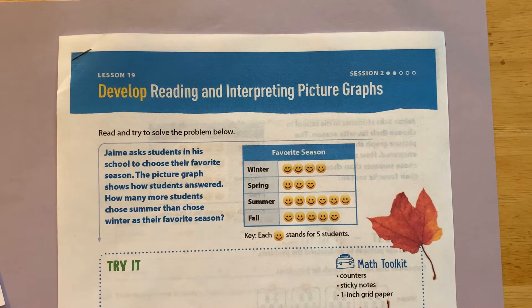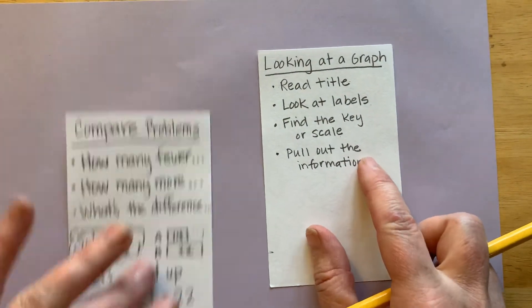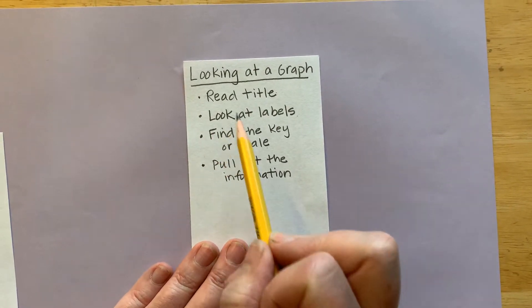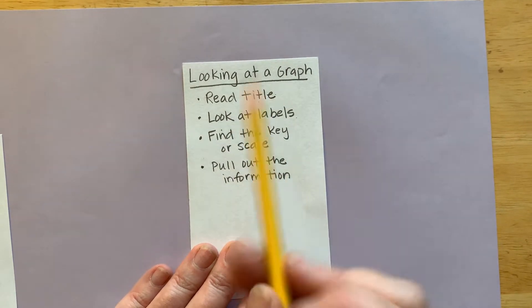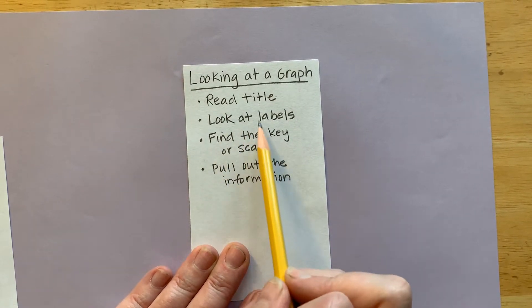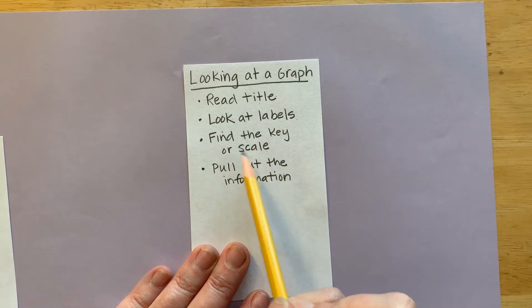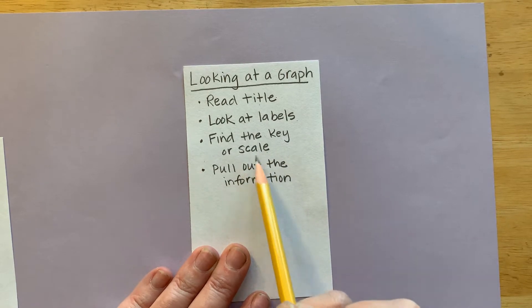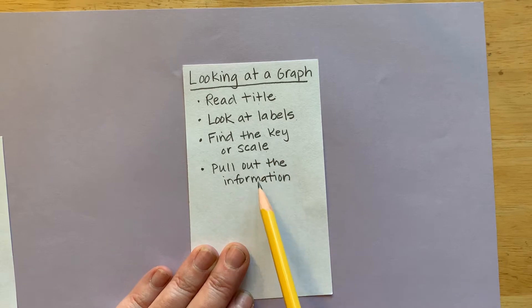Before we get started on today's lesson, I want to review what we talked about last time. When you're looking at a graph, there are some things you need to think about. The first thing you want to do is read the title. Then make sure you look at the label so you understand what the graph is about. Then you need to find either the key or the scale, depending if it's a picture graph or a bar graph. Once you have those things figured out, you can pull out the information.